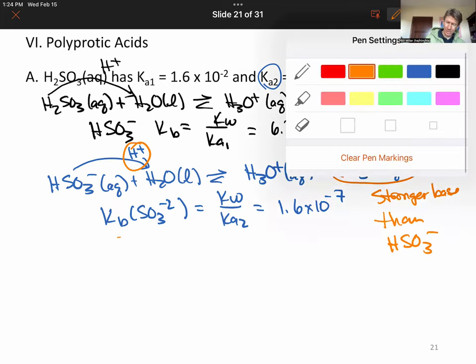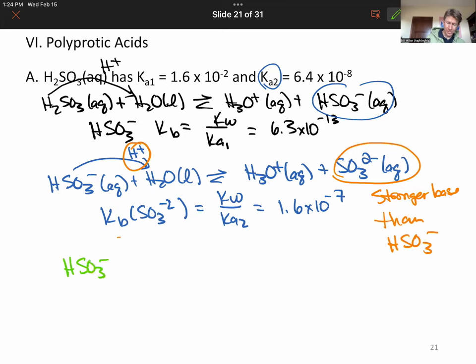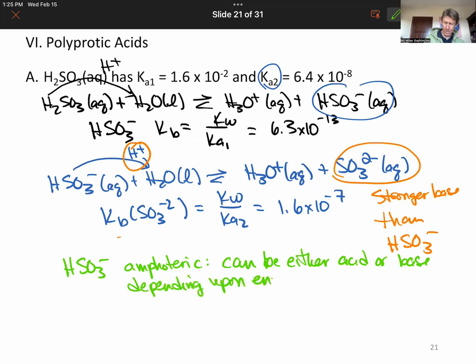But where we're also coming away is this idea that HSO3 minus, since it can be both an acid and a base, is something called amphoteric. And one working definition of an amphoteric material is that it can be either an acid or a base, depending upon its environment. And by environment, I just mean what else is around it. There's another amphoteric material that we've seen. That's water. Water can be an acid or a base depending upon its environment as well.